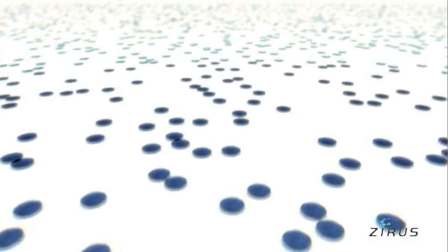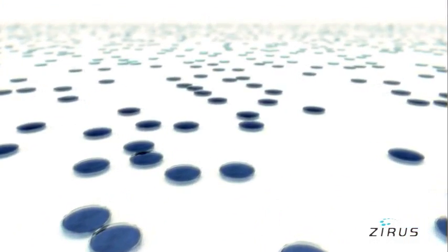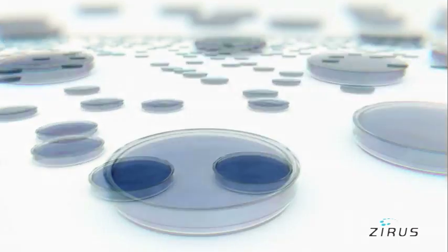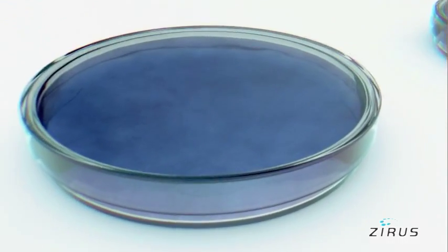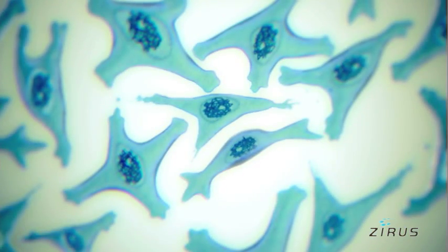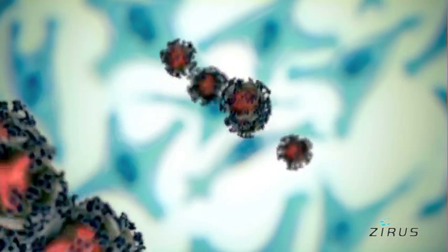Scientists at Zyrus are working on new and better ways to prevent and manage viral infection by developing a platform of host cell-based targets to inhibit viral replication. To find these targets, we are using a patented technology called the Gene Trap.